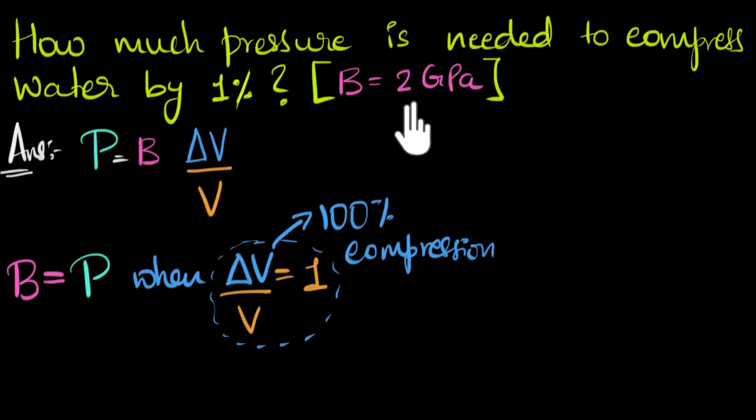Which means for water, we require two gigapascals to compress it by 100%. So now that we know that, how much pressure is needed to compress by 1%? We could just solve this using cross multiplication. That's why I like to think of it this way. So let's go ahead and write that.